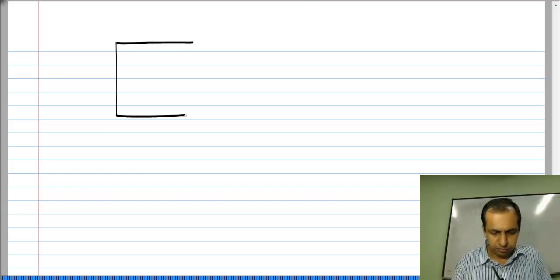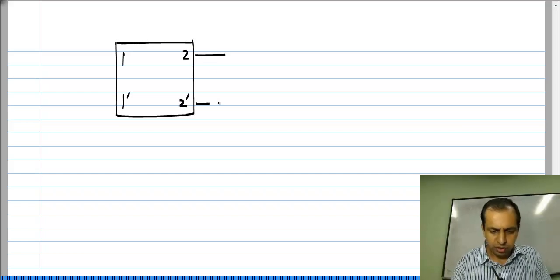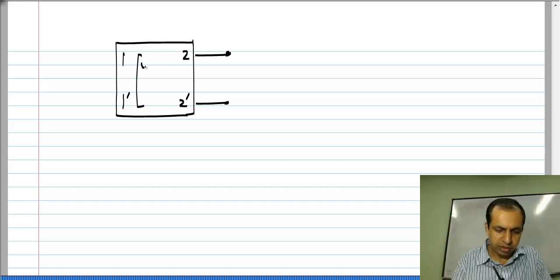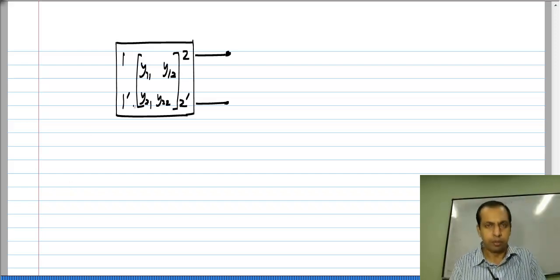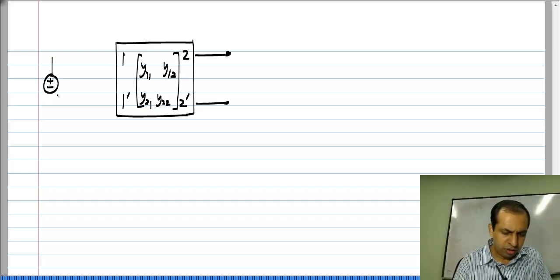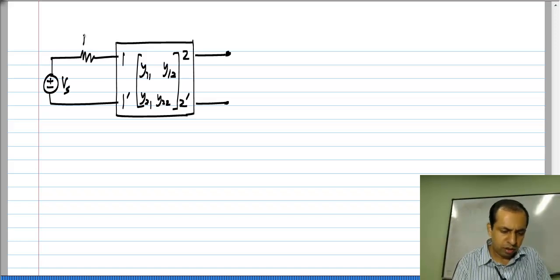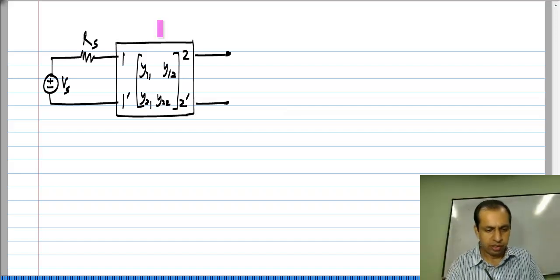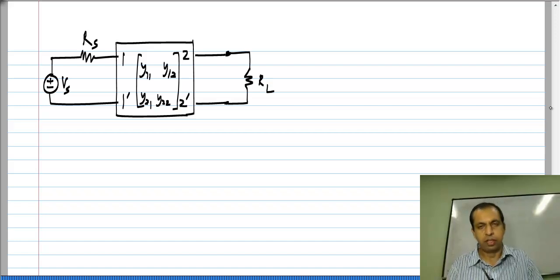For instance, let us say you had a circuit whose Y parameters are given or you have calculated them already. Now, I could connect a source like this V s in series with the resistance R s and I could have a load resistance to this side and I define the voltage across the load resistance to be V naught. Now, I need to calculate V naught by V s.